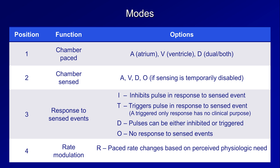Different pacemaker models have alternative means of identifying increased need for situations in which the pacemaker itself might not be moving up and down despite heavy exercise, such as bicycling. If this function is not present or is turned off, the fourth position is left blank. The nomenclature also allows for a fifth position to indicate multi-site pacing, which is almost never seen in practice, so it's typically left off.